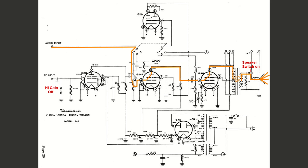Each stage progressively gets that signal up a little bit. When it finally comes out the plate, it's put into the audio output transformer. As you can see by the squiggly lines, it is magnetically or inductively coupled to the secondary of the transformer, and therefore powers the speaker — we hear sound coming out. The switch for the speaker is set to on, because if it was off we wouldn't hear anything, as Jack demonstrated in his videos very well.